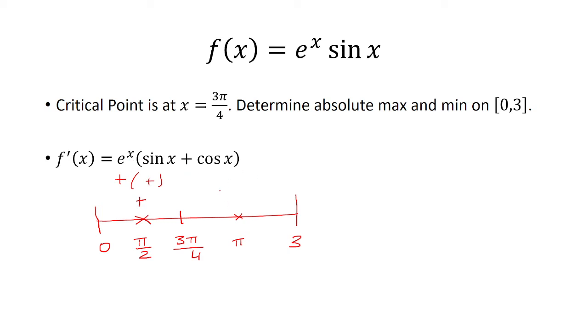Now, when I plug in pi, e to the pi is positive. Sine of pi is 0, but cosine of pi is negative 1. So positive times a negative gives me a negative.